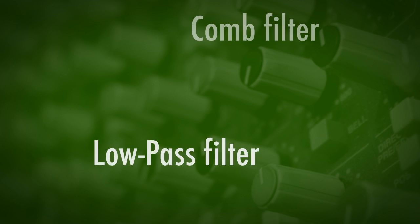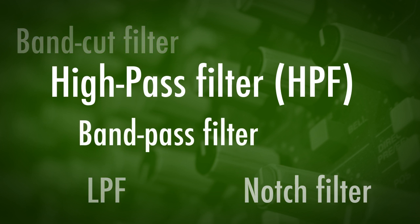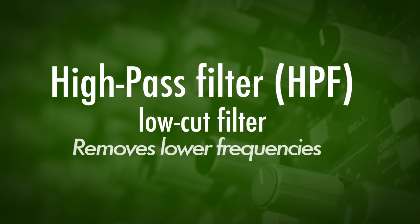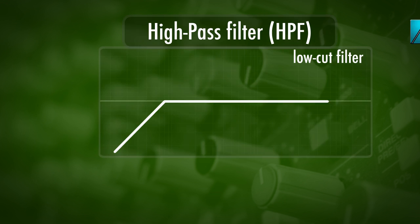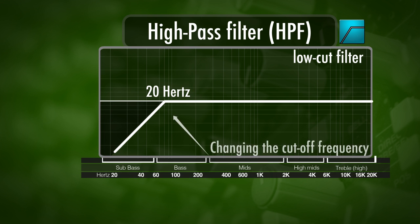When looking at filters, there are different types of filters that we can run into. The first filter I'm going to take a look at is a low cut filter, also called a high pass filter. A high pass filter lets through the high frequencies by cutting all the low frequencies. This can be helpful when you just need to remove a whole bunch of low frequencies from your signal, and it can be really cool as an effect.